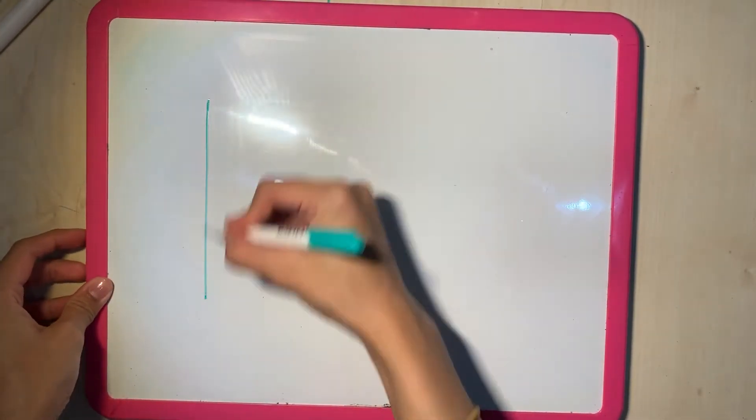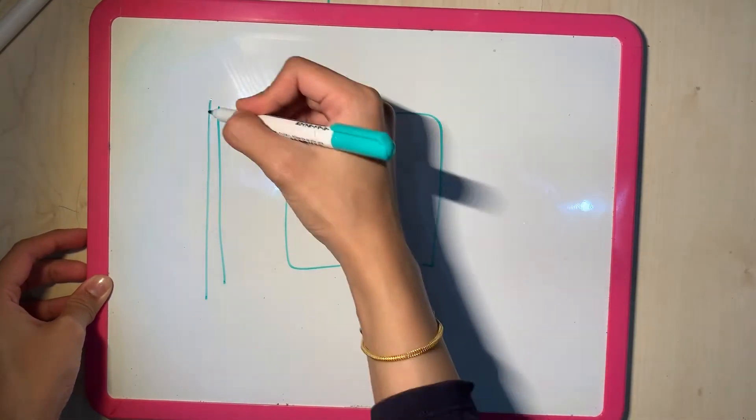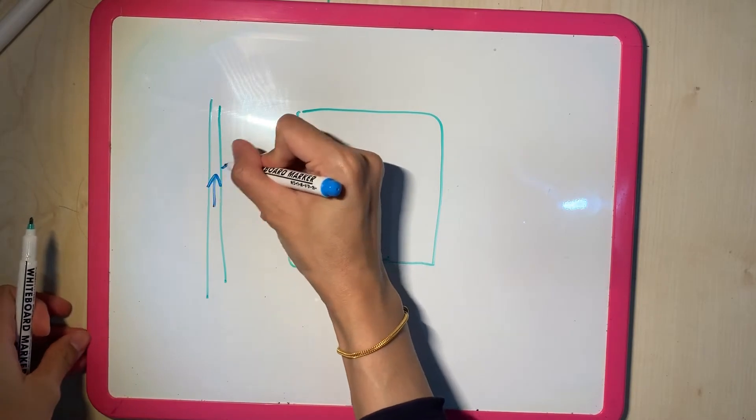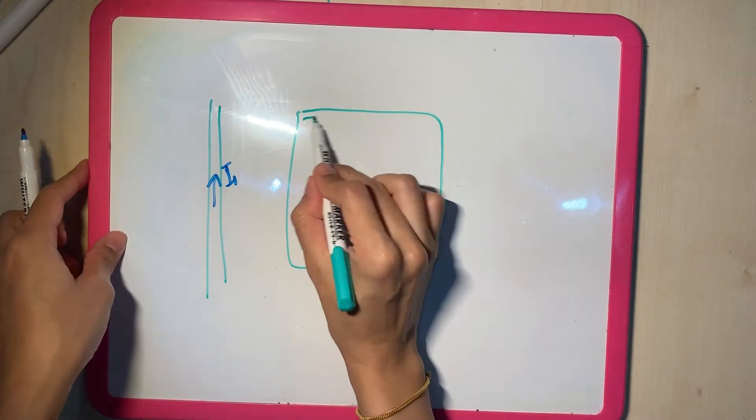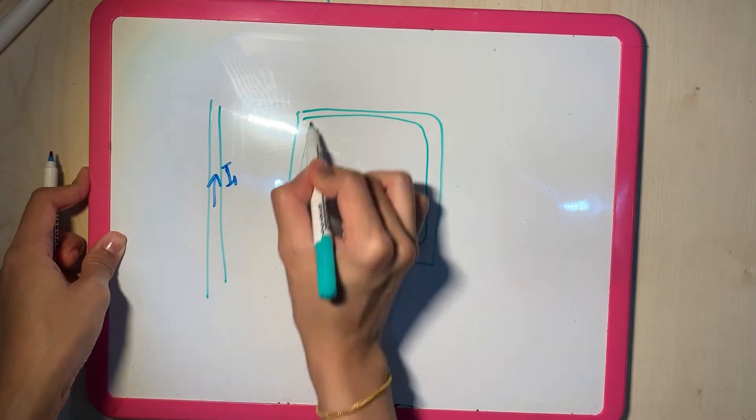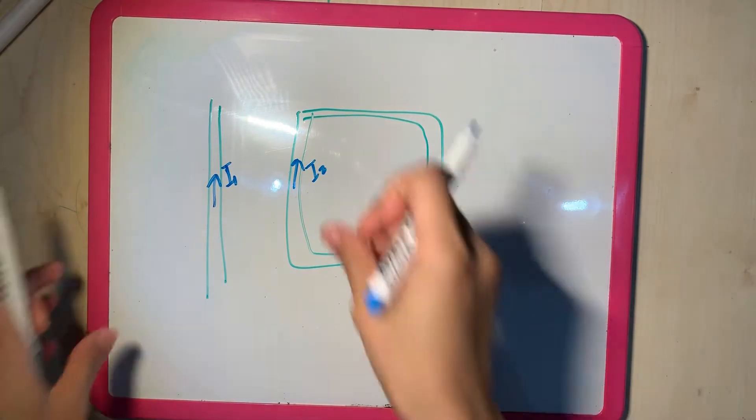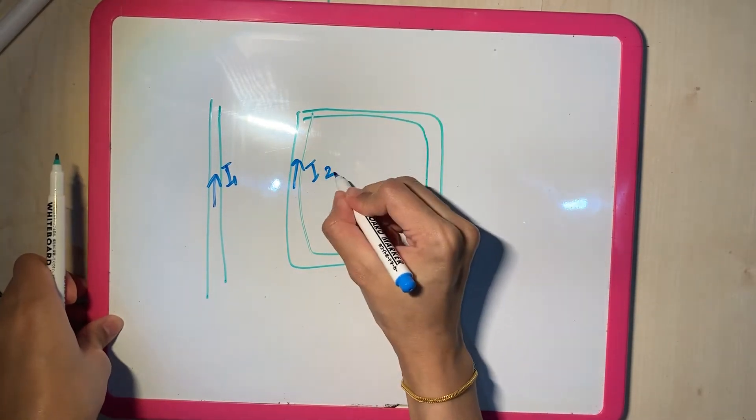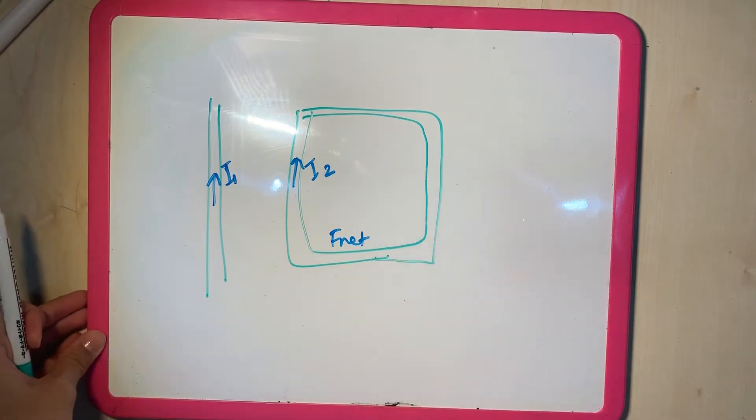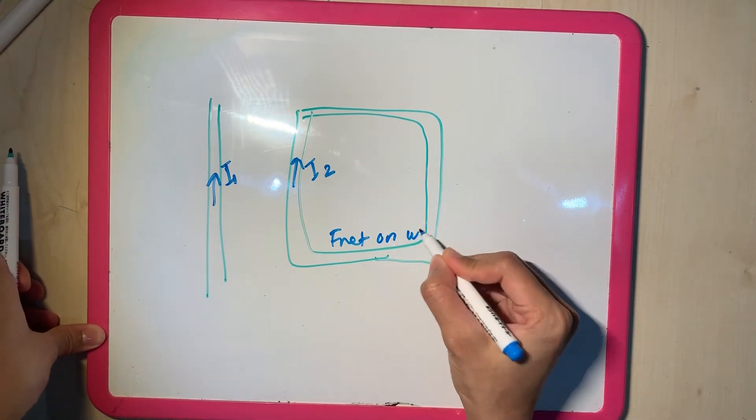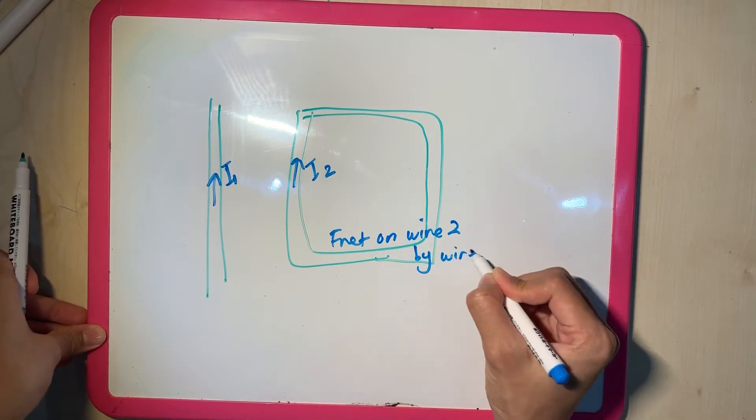We have a straight wire and also a square loop whereby the straight wire carries current I1 and the square loop carries current I2. That is the diagram. The question is what is F net on the square loop, F net on wire 2 by wire 1.